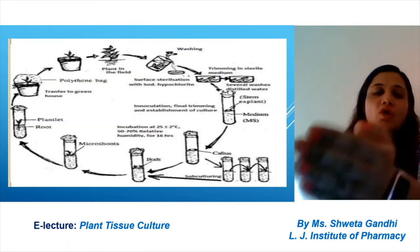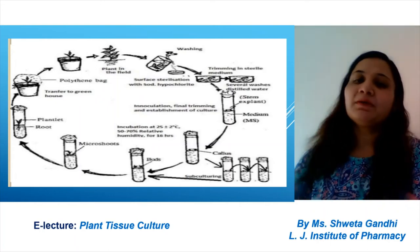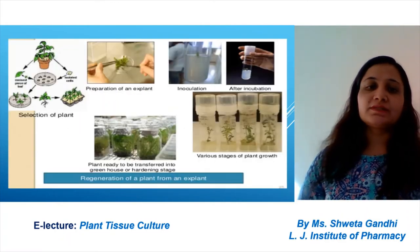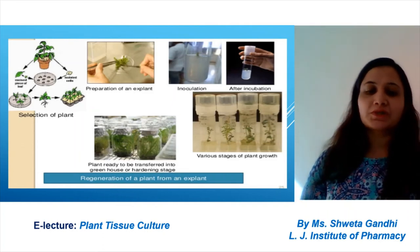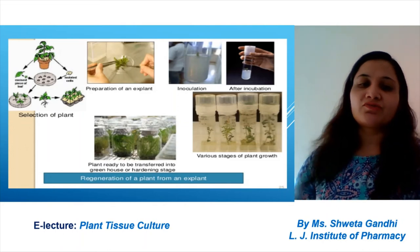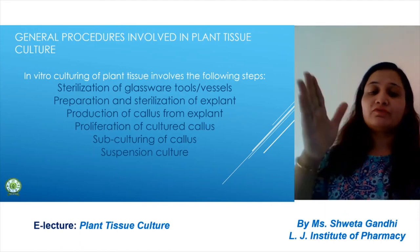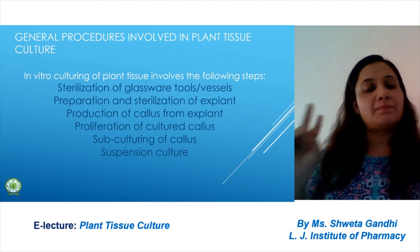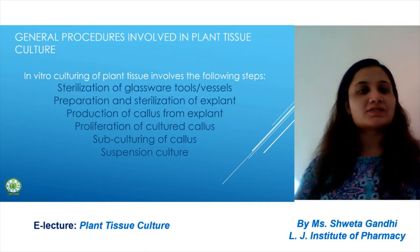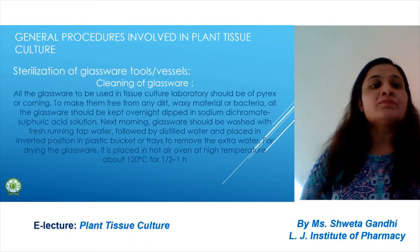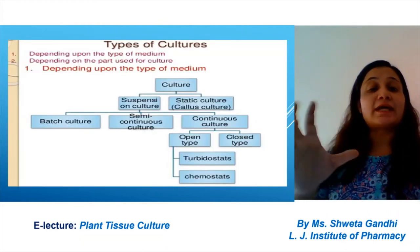This is the complete cycle showing how plant tissue culture can be done in a proper step-by-step manner — regeneration of plant from the explant: the explant is taken, inoculation and incubation are done, and then the plants are ready to transfer to the greenhouse. The major steps for in vitro culture are: sterilization of glassware, preparation and sterilization of explant, production of callus, proliferation of callus, subculture of callus, and suspension culture.